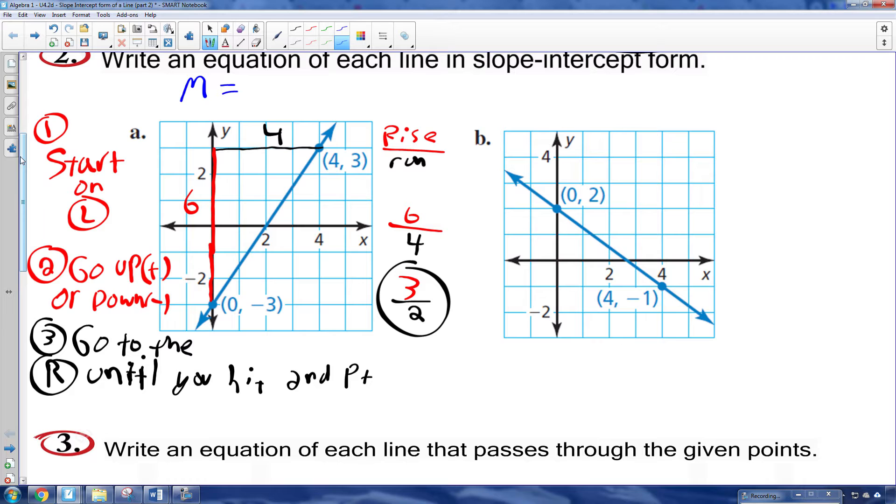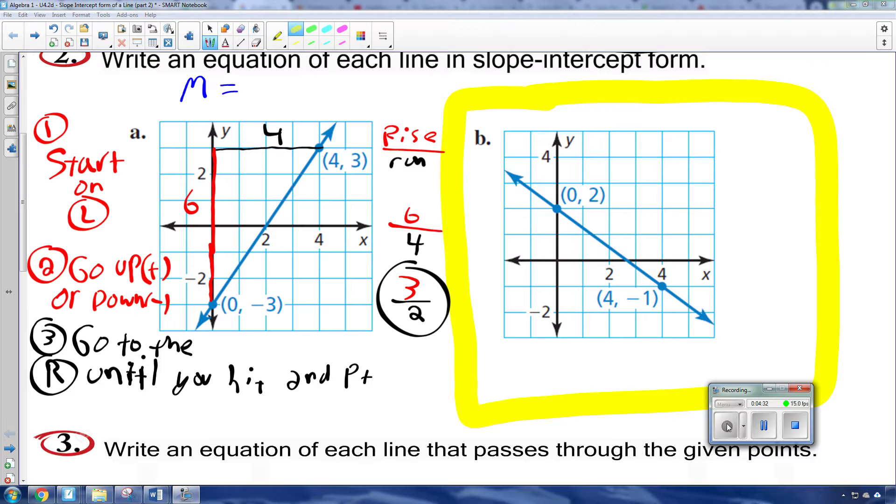You want to say 3 over 2. Why don't you pause the video and try to write the slope intercept form of 2b. Try this problem right here. This guy. So pause the video and give that a shot.